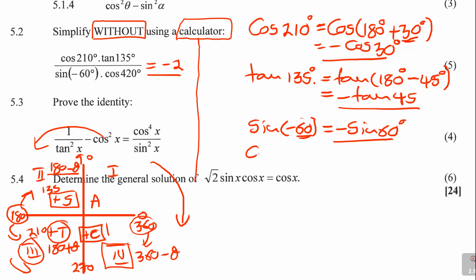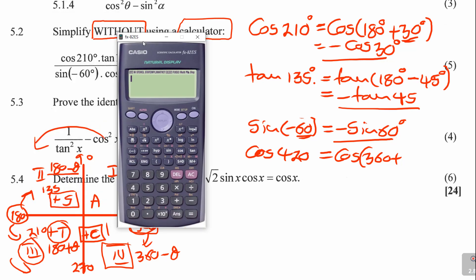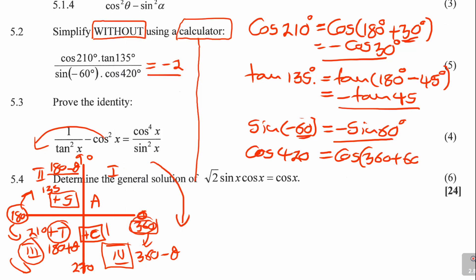The next one is cos 420. They are just bringing in different reduction methods. Why 420? Because there is no 420 in the CAST diagram. You say cos, remember the full revolution — you start from zero, go around, it's 360. So you ask: 360 plus what number gets you to 420? Subtract: 420 minus 360 equals 60. Since you've completed a full revolution, everything lands in quadrant 1 — positive. So this simply becomes cos 60.